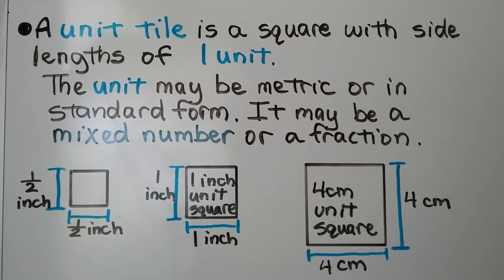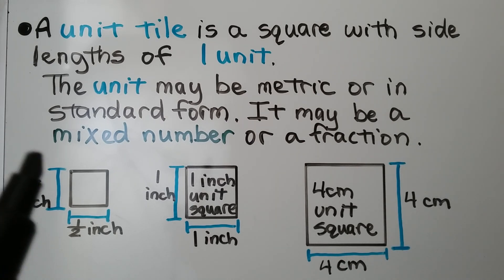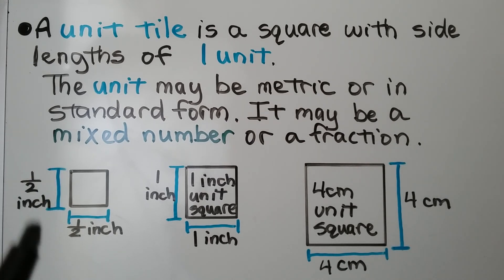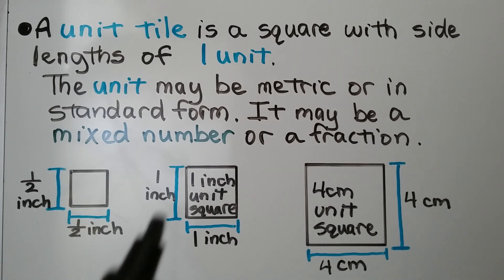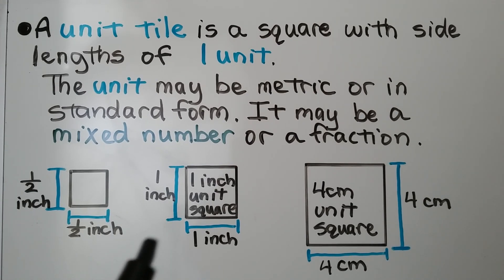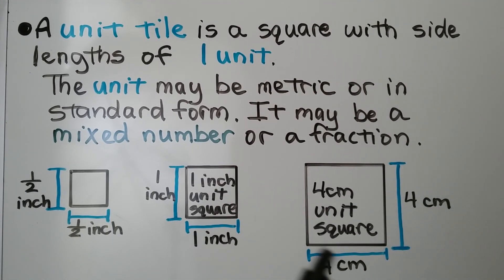If we have a unit tile that is a half inch wide and a half inch in length, we have one half by one half. If it's one inch wide and one inch in length, it's one by one. And if it's four centimeters, it's four centimeters times four centimeters for the area.